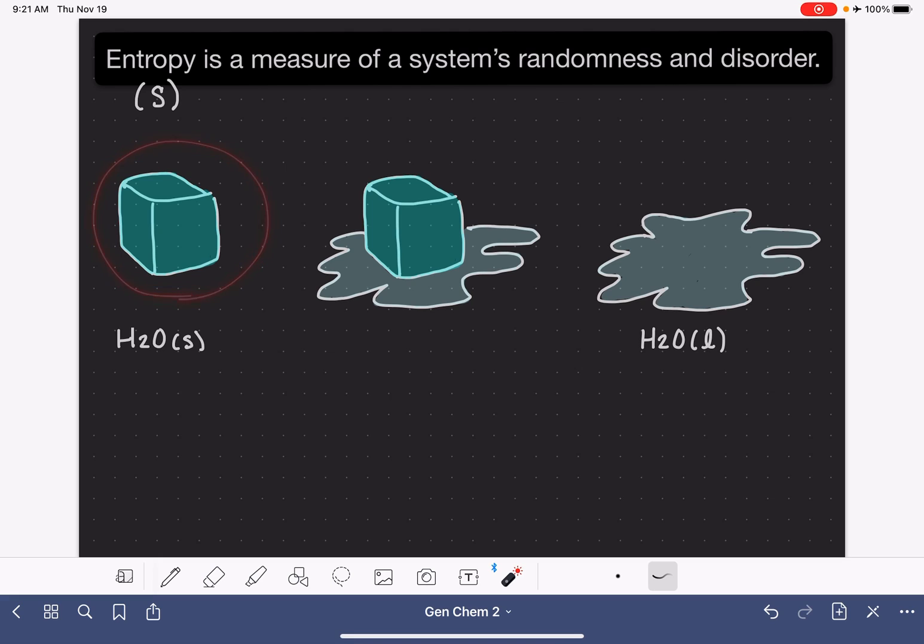Each of these systems have, within the molecules, some degree of randomness or disorder. For the ice cube, the water molecules should be arranged in a very orderly fashion. We can imagine that there might be some sort of disruption in the pattern in which the ice cubes are arranged, and that would contribute to randomness and disorder.